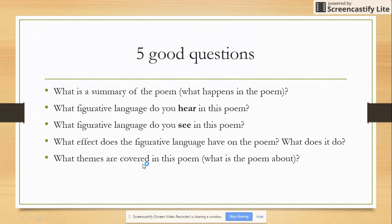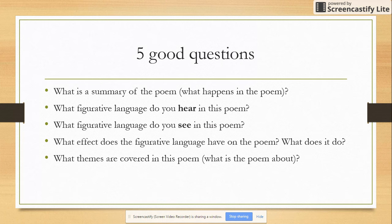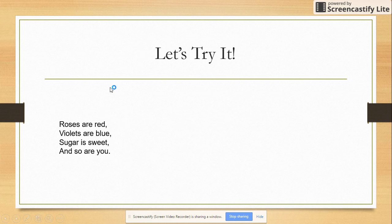And then number five, what themes are covered in the poem? What is the poem about? Once you answer all five questions, you can have a pretty good viewpoint of what exactly is going on in the poem. So let's go ahead and try that with a really simple one — a poem you've all heard many times before. 'Roses are red, violets are blue, sugar is sweet, and so are you.'